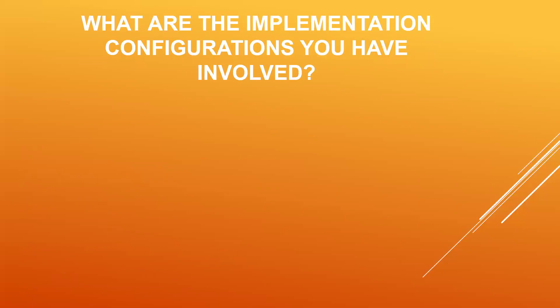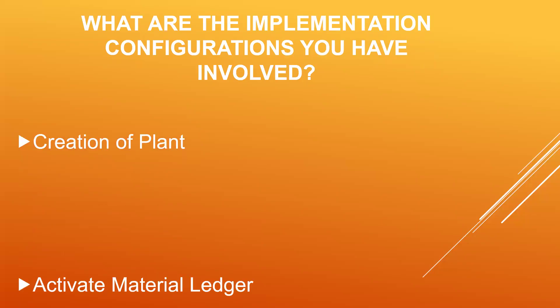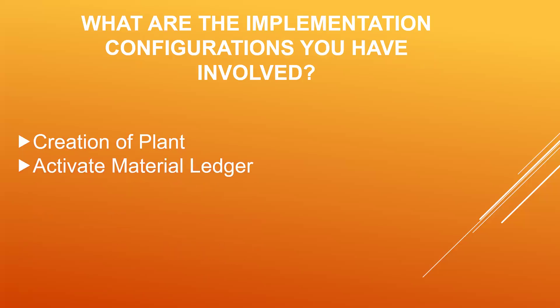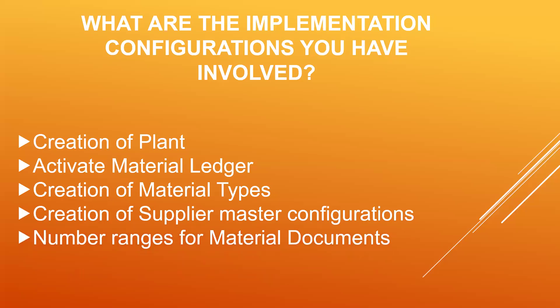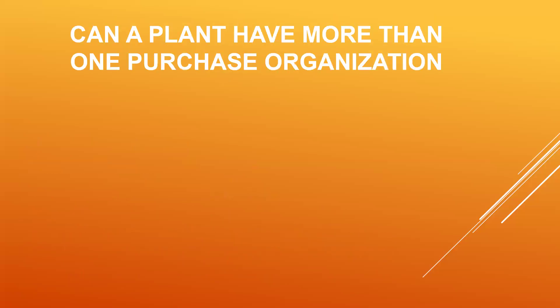What are the configurations you have worked on in an implementation? First is the enterprise structure — creation of a plant. You can also mention: activate material ledger, creation of material types, creation of movement types using transaction MMNR, number ranges for material, number ranges for vendor, creation of supplier master configurations, number ranges for material document, and number ranges for accounting document.